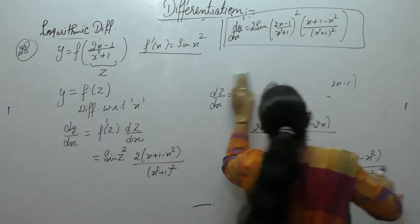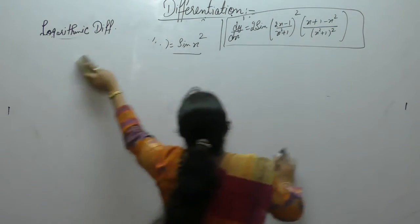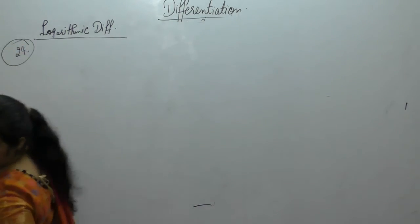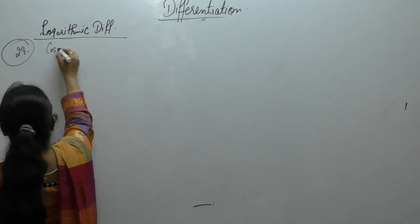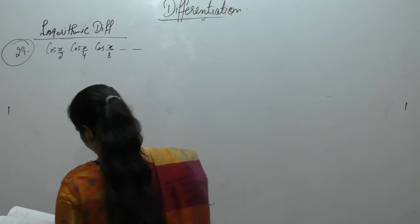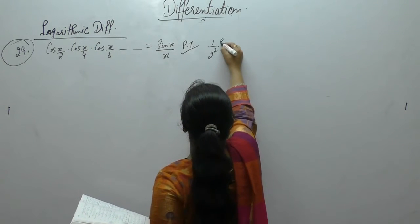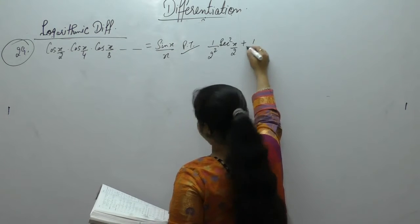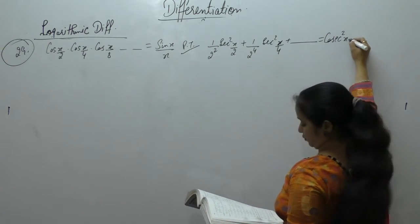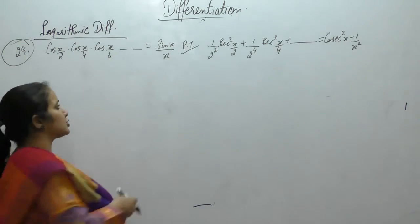Now the next problem. Given that cos(x/2)·cos(x/4)·cos(x/8)·... = sin(x)/x, prove that 1/2²·sec²(x/2) + 1/4²·sec²(x/4) + ... = cosec²(x) - 1/x². Since all terms are in product, take log on both sides.